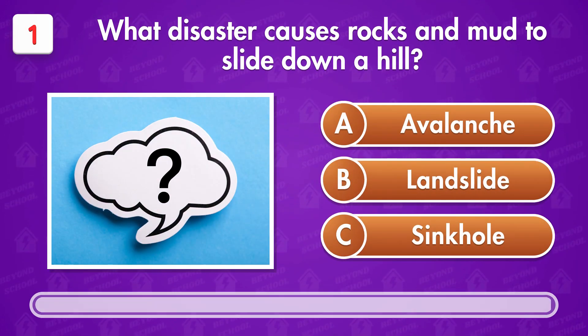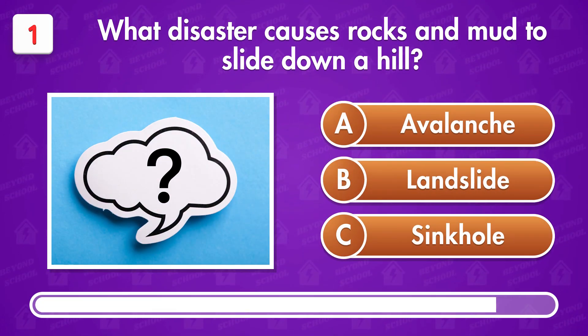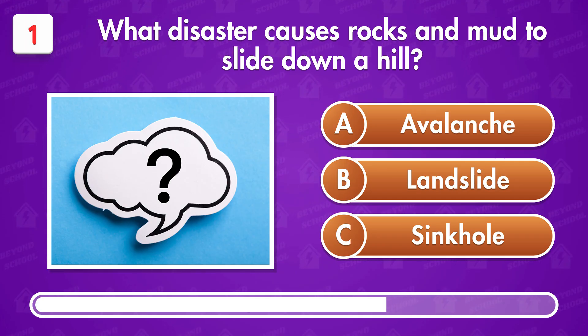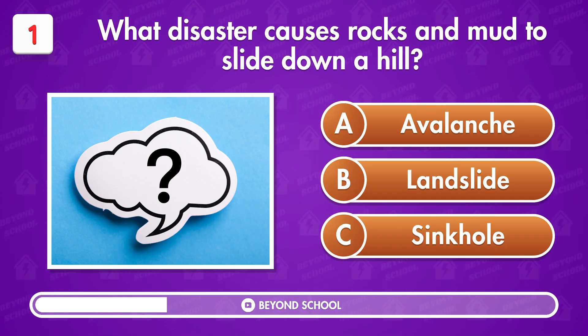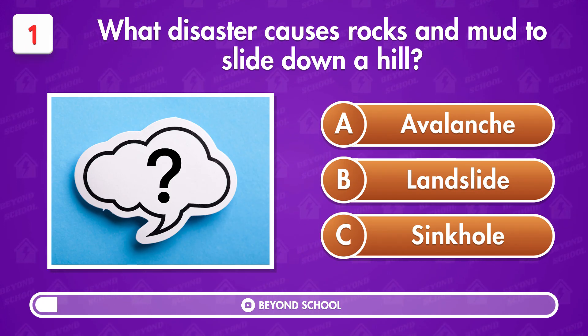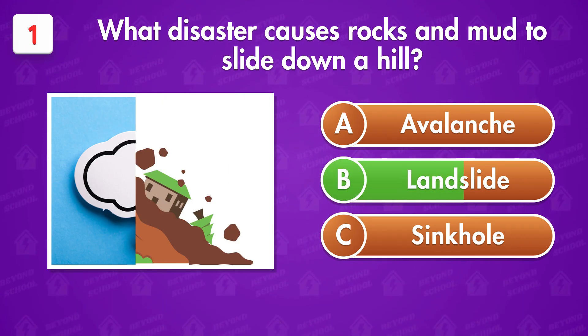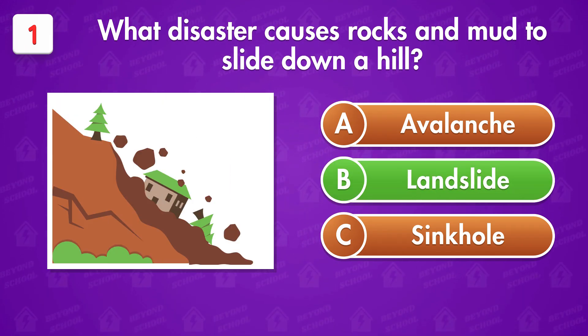What disaster causes rocks and mud to slide down a hill? Option B — Landslide.